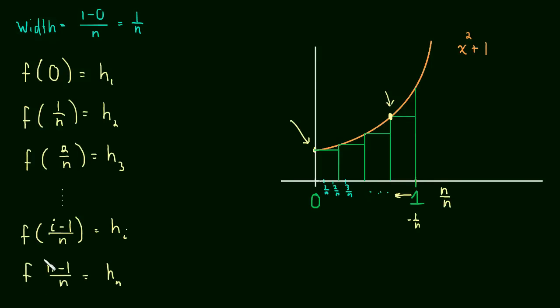So f of, well, this simplifies to f of n over n minus 1 over n, which is what we just said it needed to be, f of 1 minus 1 over n. It's the height at 1, but we're shifting over by 1 rectangle. So it's really this height of this last rectangle.